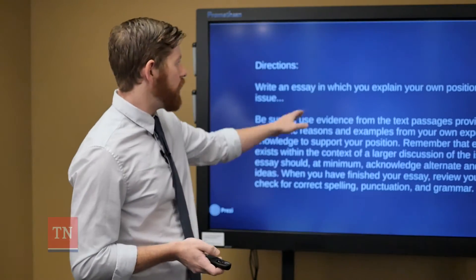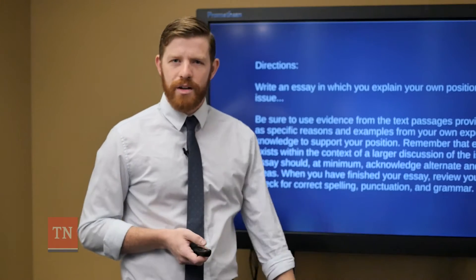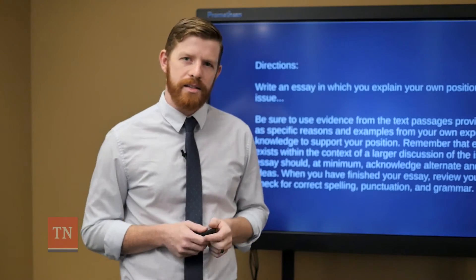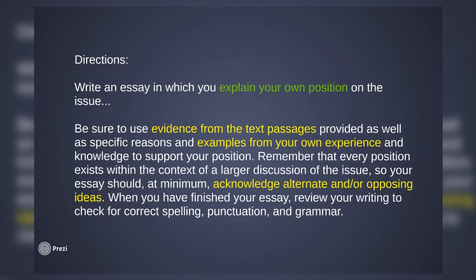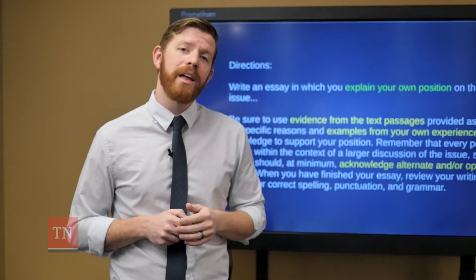Let's look at what you actually need to plan in these first ten minutes. If you remember from the first video, these are the directions you're probably going to see in the HiSET essay. You need to figure out your own position on the issue. You need to find some evidence from the text passages and plan exactly which evidence supports your argument. You need to look at examples from your own experience, and finally you need to acknowledge alternate or opposing ideas — basically figure out what other people would say that is against your argument.